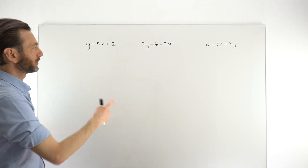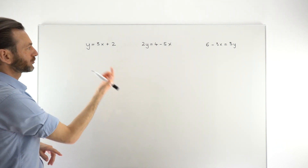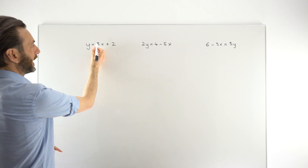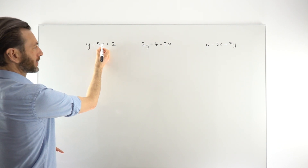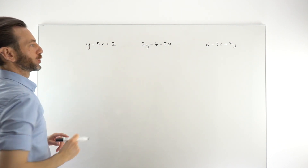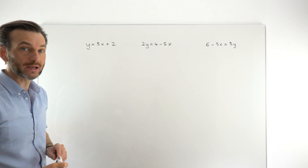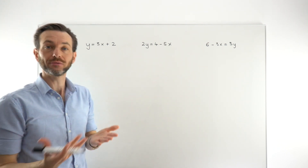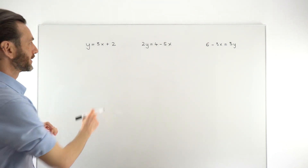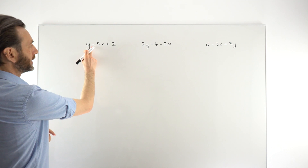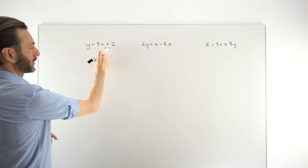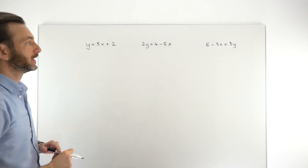Just a reminder that straight line graphs are in the format y equals m, which is the gradient, times x plus c, which is the y-intercept. Different letters can be used as well, but in general it's y equals gradient times x plus the y-intercept.